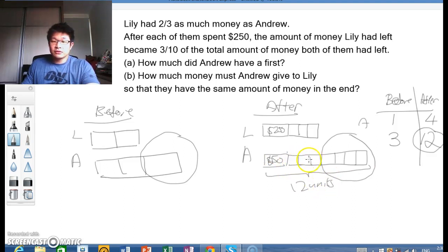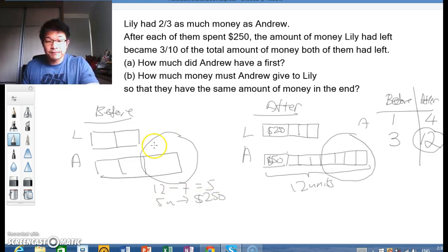And you can take away the 7 units. So 12 subtract away 7, you get 5. And therefore, your 5 units would be this $250. One unit would therefore be $50.